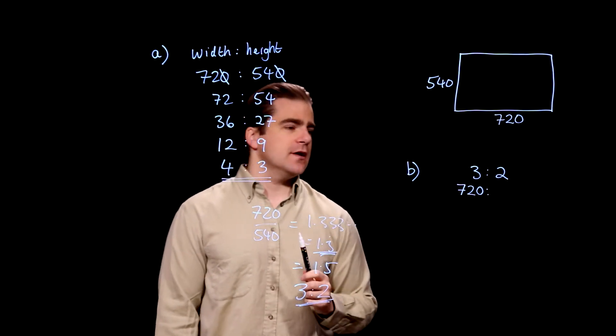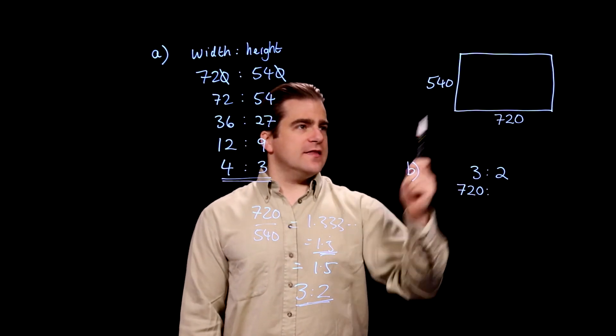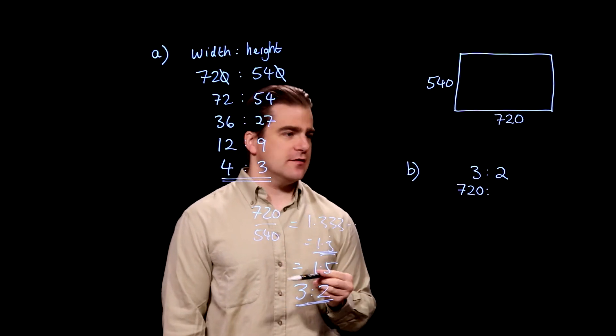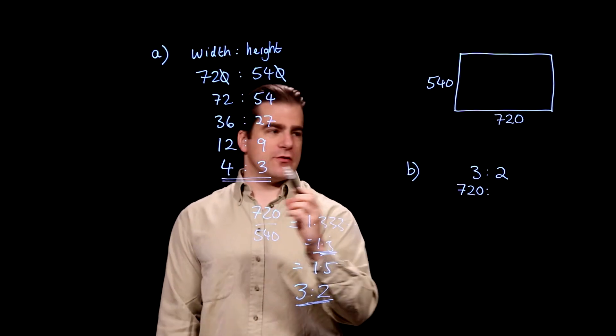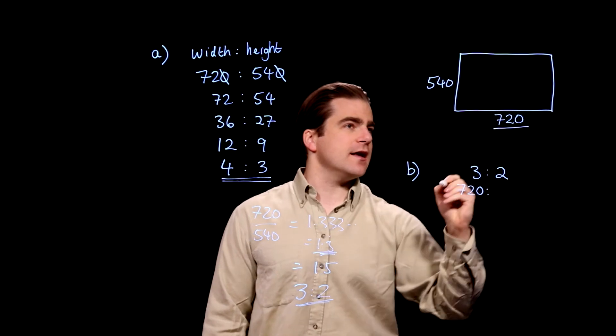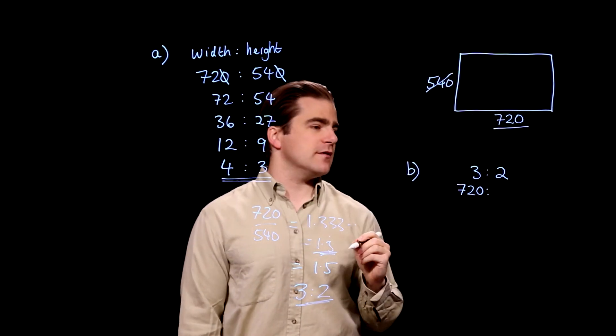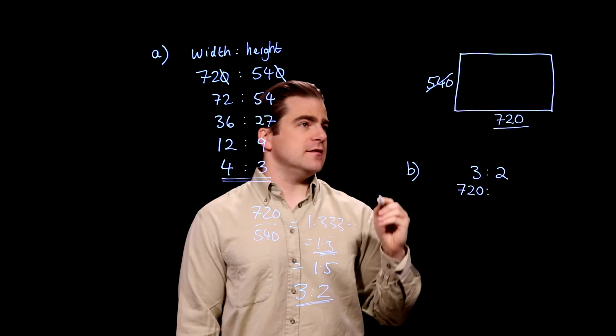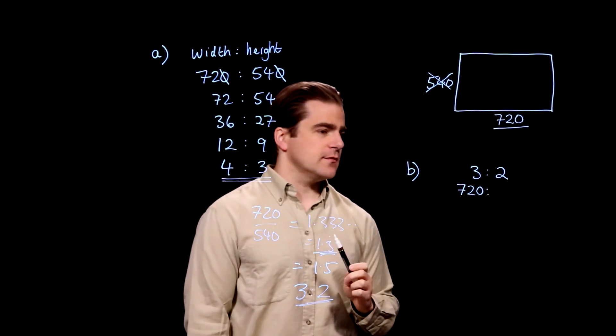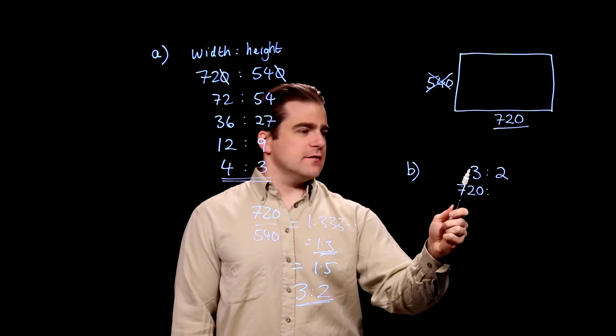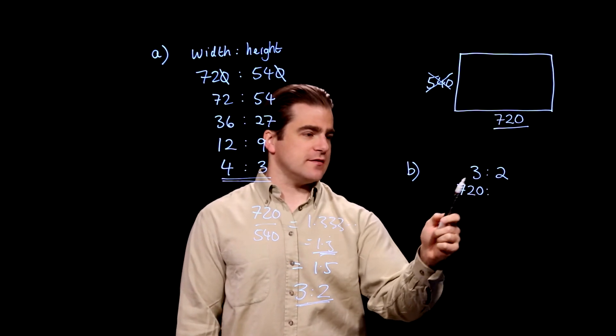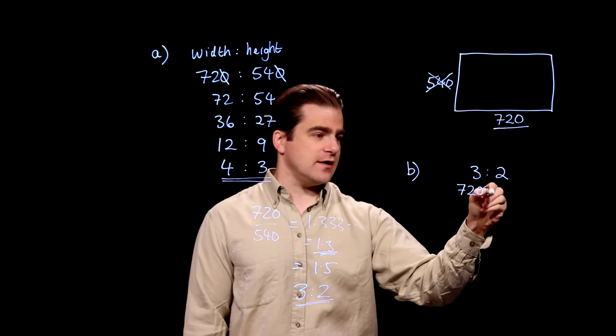Part B. This thing is going to be changed. The dimensions are going to be changed from 4 to 3 to 3 to 2, and the width is going to remain at 720. So that's the same, and the width is going to be decreased. So that can go. We have to find a new width. Got that? 3 to 2, and it's going to be 720 to something, because the width is still 720. So we have to find that.